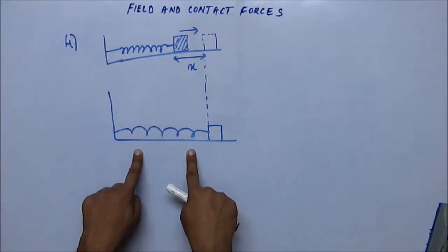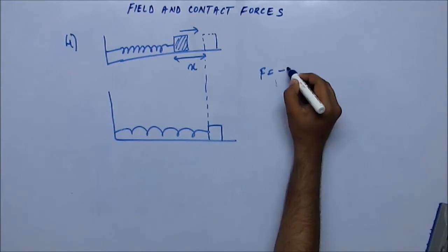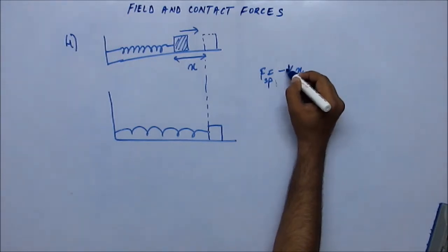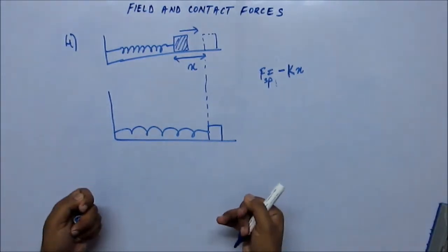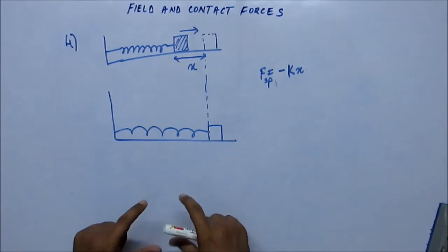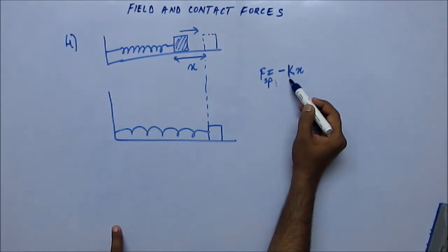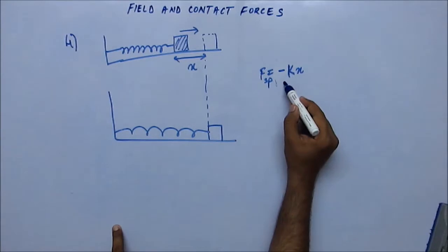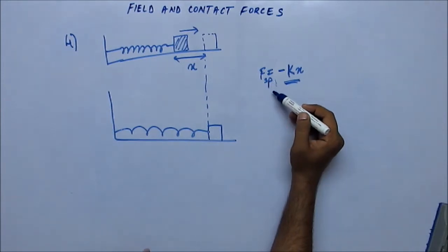There is some spring force in the spring, and that force we represent as F = −Kx. This is the spring force. K is the spring constant — a constant depending upon the strength of the spring. Some springs can be elongated easily because their spring constant is lesser; some springs are very hard to stretch and their spring constant is higher. This x is the displacement or elongation caused in the spring.